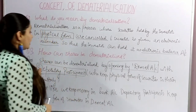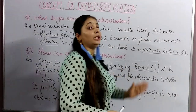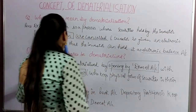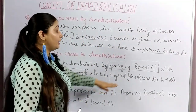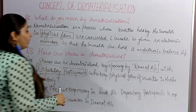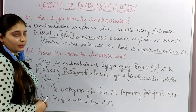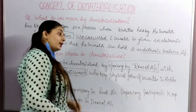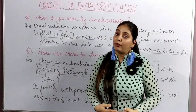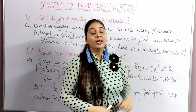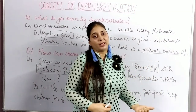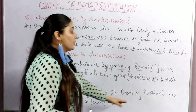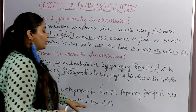How can shares be dematerialized? Shares can be dematerialized by opening a demat account — just as you open a bank account to convert your cash into electronic form, you open a demat account to convert your shares into electronic form. The depository participant keeps the physical form of securities in their custody, just as a bank keeps the physical form of your cash. Depository participants keep the electronic form of securities in the demat account.